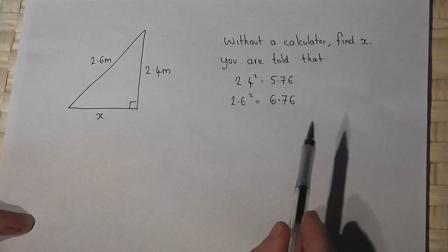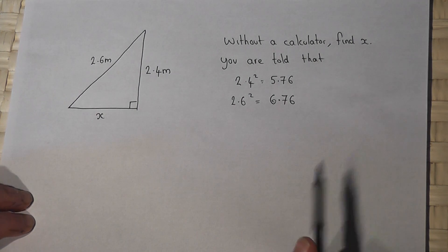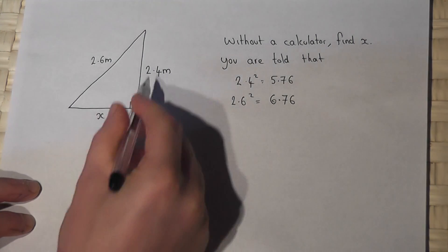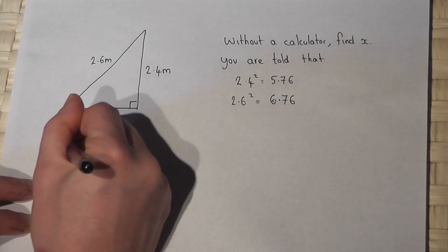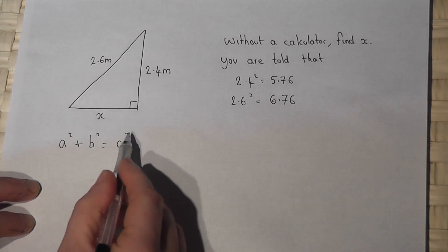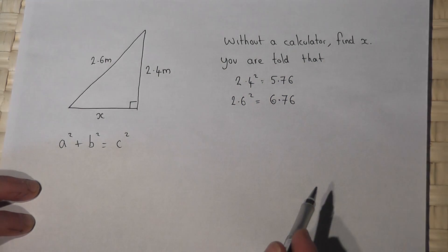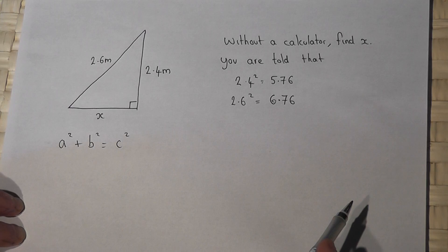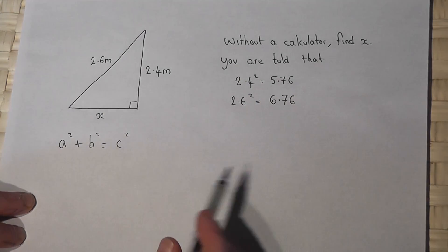Now then, we know that for a right angled triangle, the rule that the three sides obey is that a squared plus b squared equals c squared, where c is always the hypotenuse and a and b are the other two sides which form the right angle.